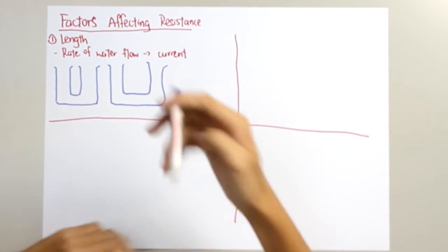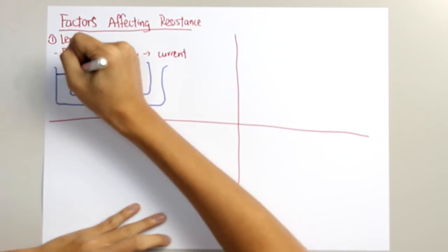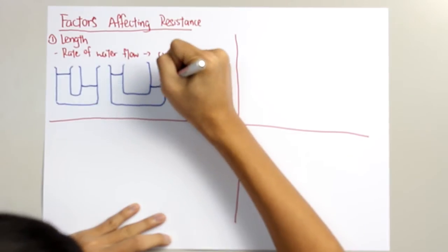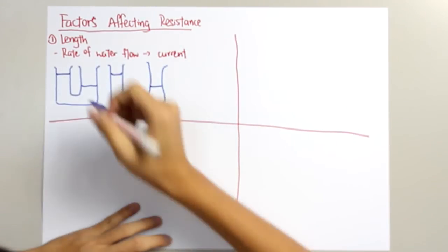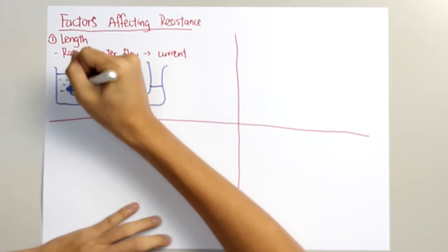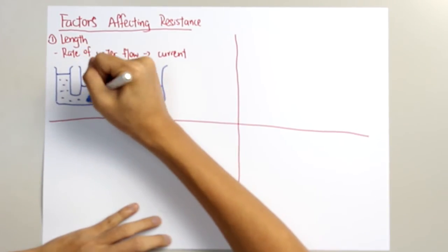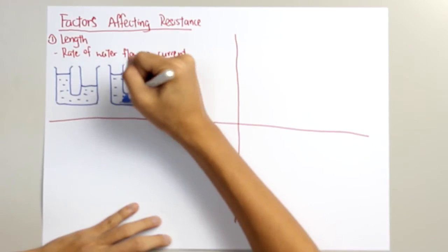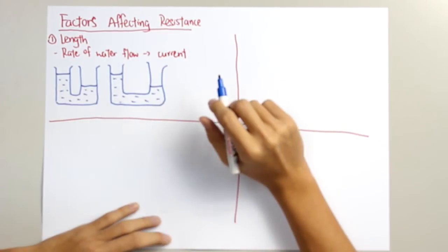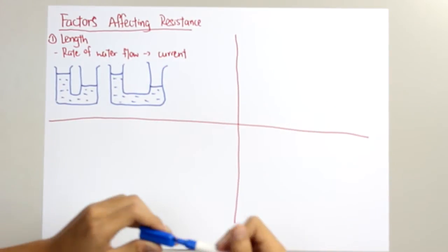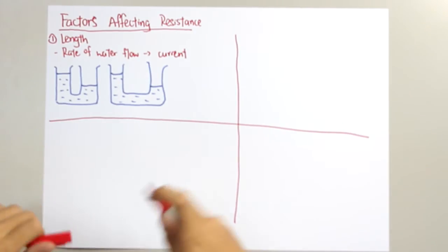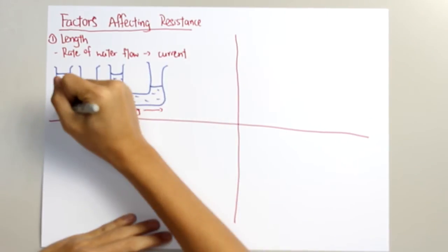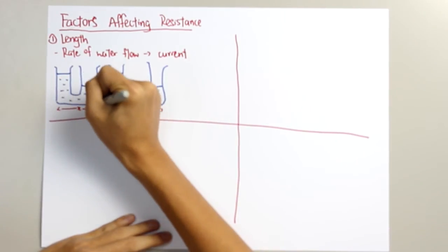Then again, we draw the difference in water level for each container to indicate the potential difference across this section here. Now, we can see that the length of Y is greater than the length of X.